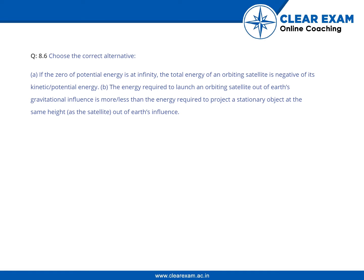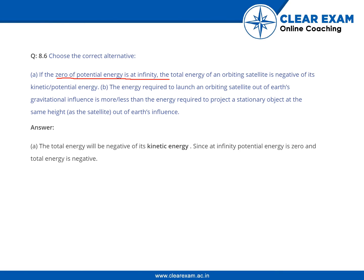Choose the correct alternative. Given that the zero of potential energy is at infinity, the total energy of an orbiting satellite is negative of its kinetic or potential energy. Next, the energy required to launch an orbiting satellite out of Earth's gravitational influence — is it more or less than the energy required to project a stationary object from the same height as the satellite?